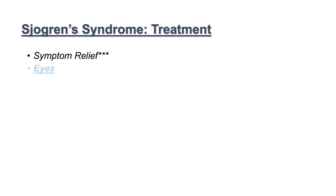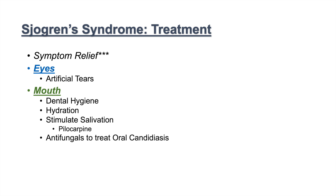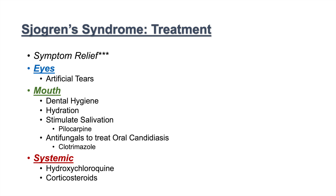Once the diagnosis is made, there is no cure for Sjogren's syndrome — our goal is symptom relief. For dry eyes, we use artificial tears. For dry mouth, we ensure good dental hygiene and hydration, and can stimulate salivation using pilocarpine. If the patient has oral candidiasis, we treat it with an antifungal like clotrimazole. For systemic manifestations, we can use hydroxychloroquine or corticosteroids, generally in the context of secondary Sjogren's syndrome.